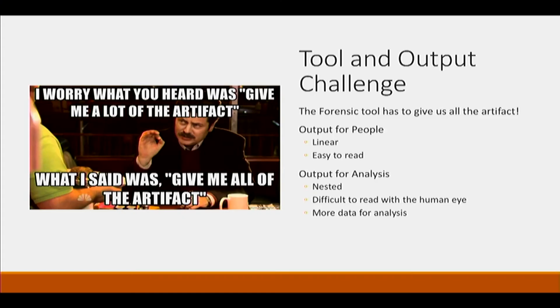We have a tool problem though. When I look for a tool, I want all of the artifact, not just some of it. But the problem is there's output that's for humans, and then there's output that we need for analysis, and the two don't go together very well. When you get output for humans, you're looking at TSV output, comma-separated value output, Excel — it's very linear.